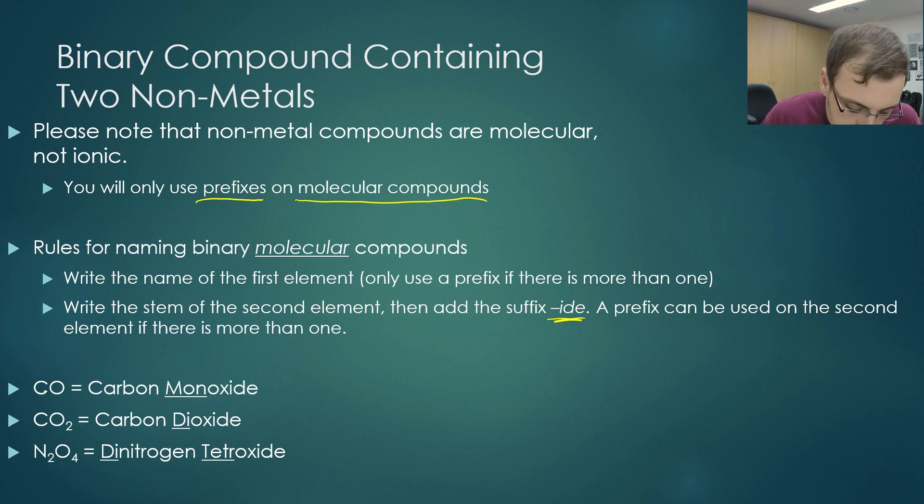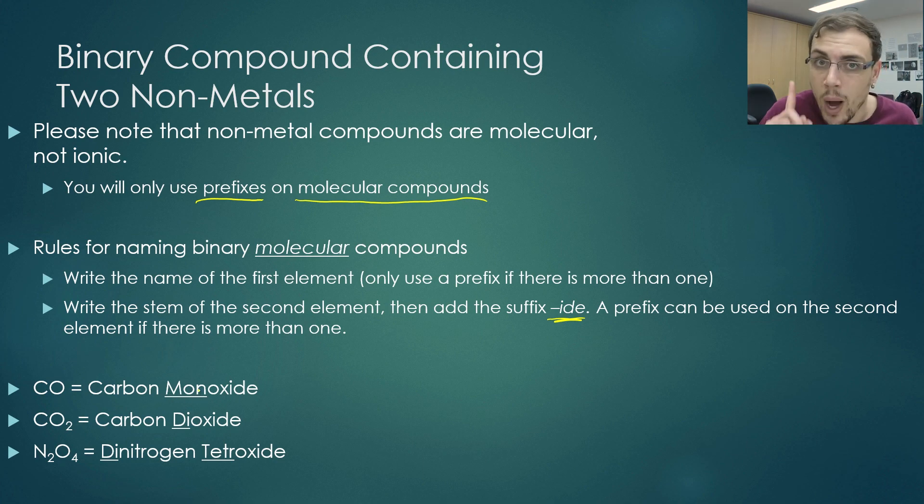Looking at this first one, we have carbon. We've written carbon. We have oxygen. We write mono, or mon, which is one oxide, because we've got oxygen, and we replace it with IDE.